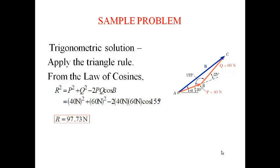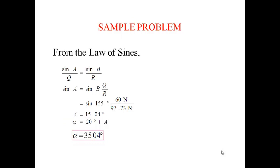From the law of sines, sin A divided by Q equals sin B divided by R. Sin A equals sin B times Q divided by R, which is sin 155 degrees times 60 N divided by 97.73 N. A equals 15.04 and alpha equals 20 degrees plus A, where alpha equals 35.04 degrees.